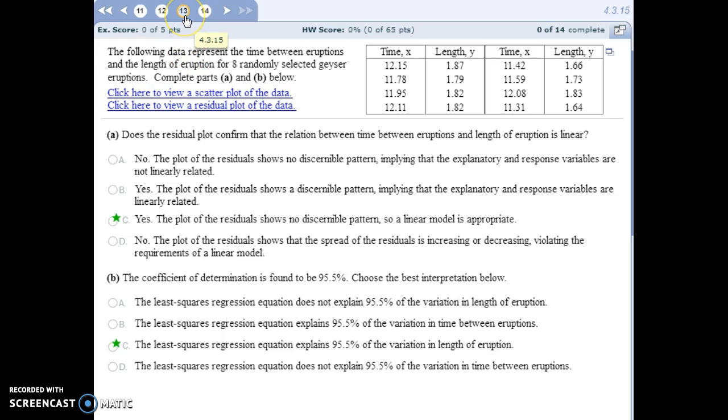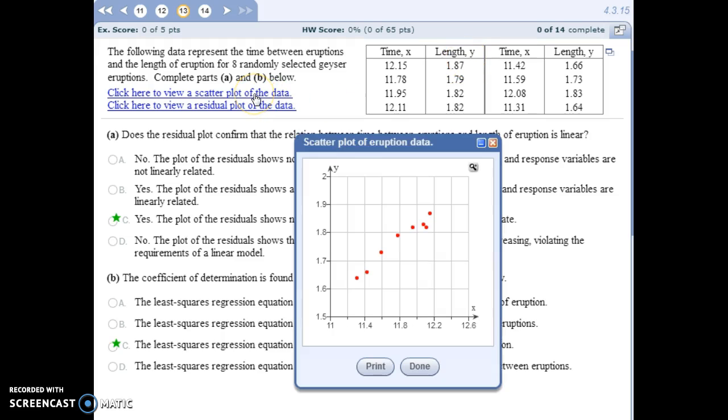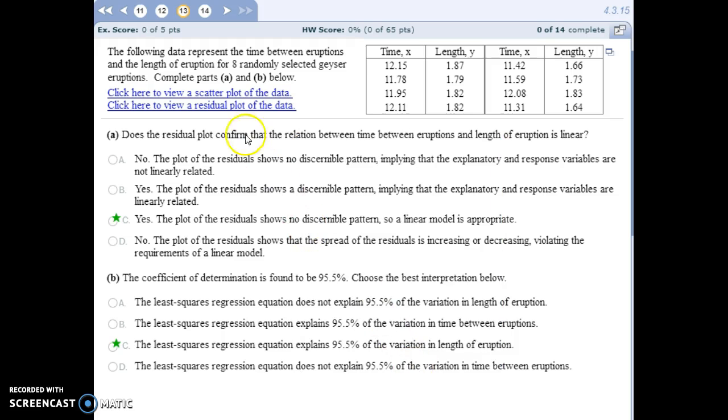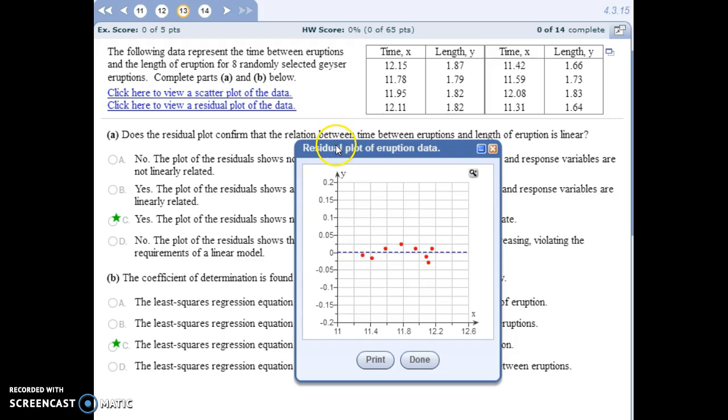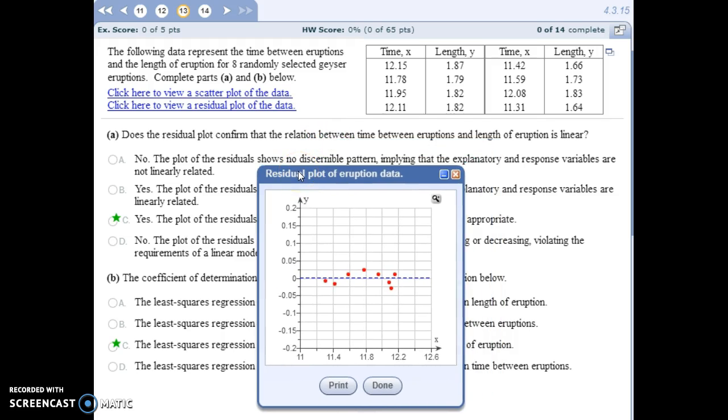Number 13 is about geyser eruptions. And our explanatory variable X is the amount of time in between eruptions. Our response variable Y is that length of the next eruption. We can look at a scatter plot of our data here. And it does appear to be linear in pattern. And we would want to check the residual plot next to confirm that the relationship between these two variables is, in fact, linear.